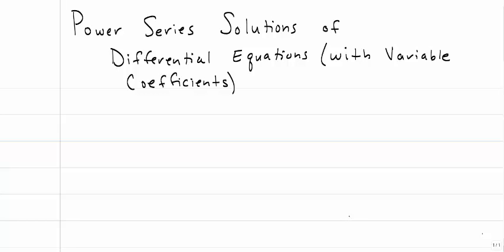This video will go through examples of using the method of power series to solve differential equations. We're going to use this for equations with variable coefficients, because although this method works for constant coefficients, we know other methods that work better — for instance, undetermined coefficients works really well when we have constant coefficients. Before we go through some examples, let's go through the basic steps of how to use this method.